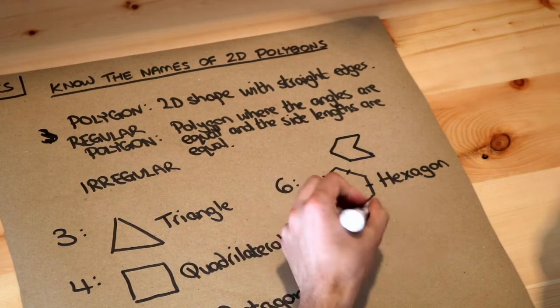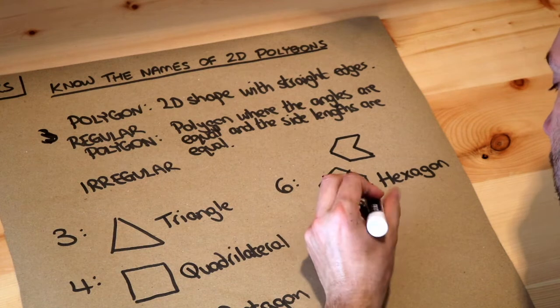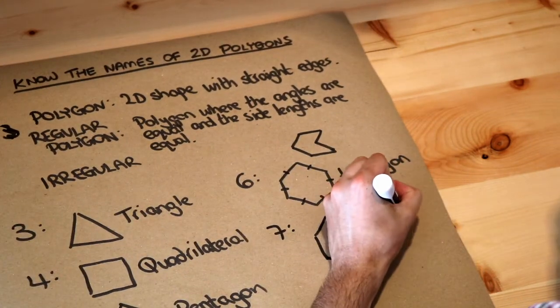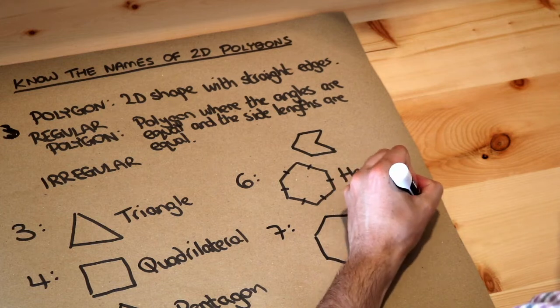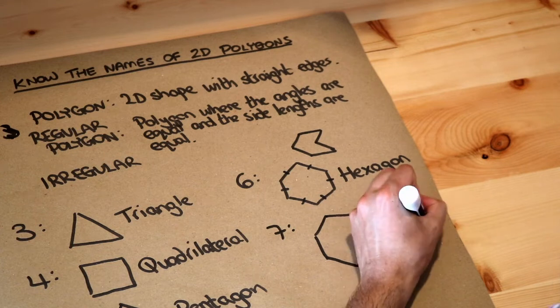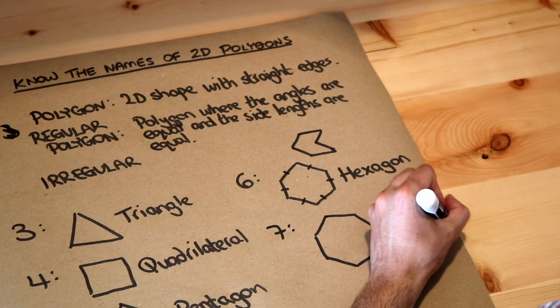What about seven? Now seven sides is not easy to draw. That's known as a heptagon and sometimes but not often known as a septagon as well. We don't generally say septagon. It's generally known as a heptagon.